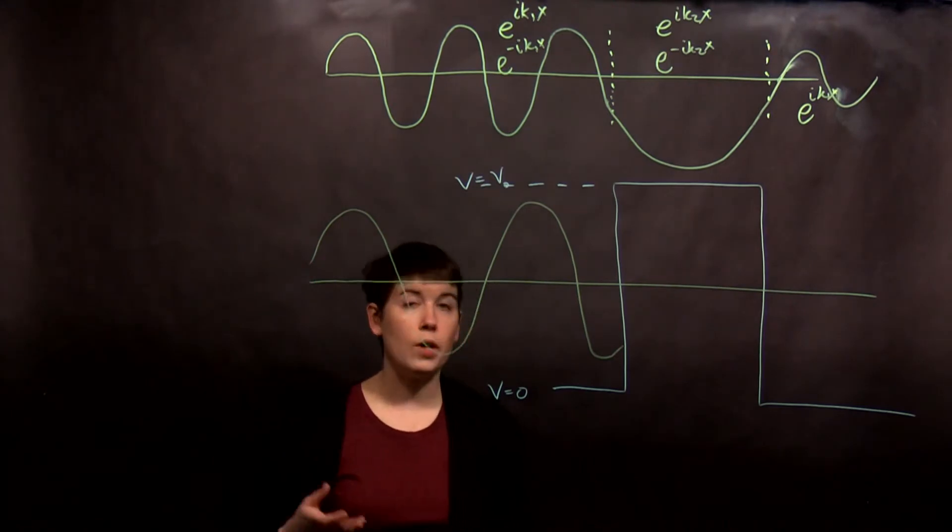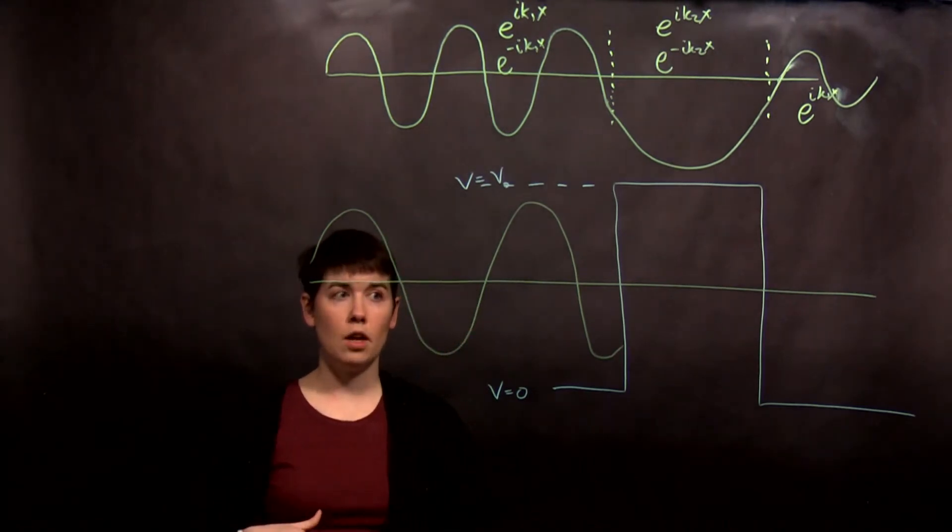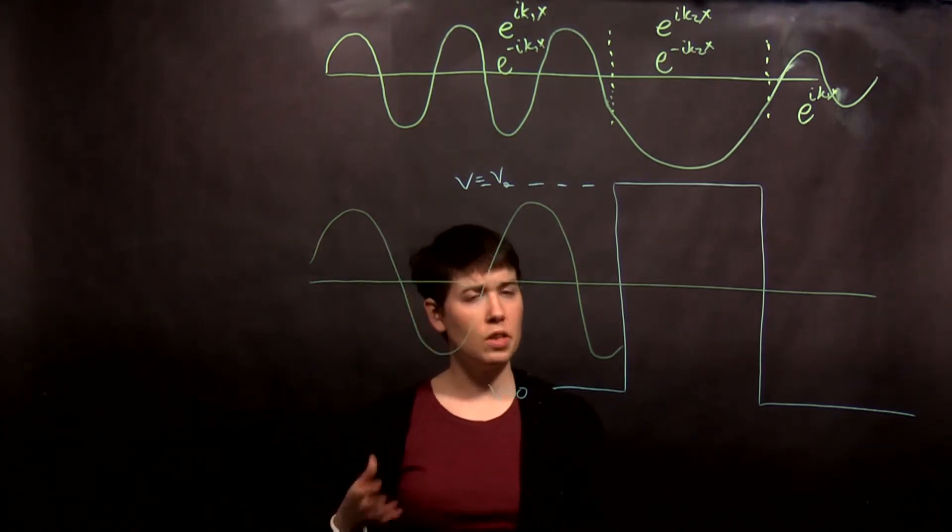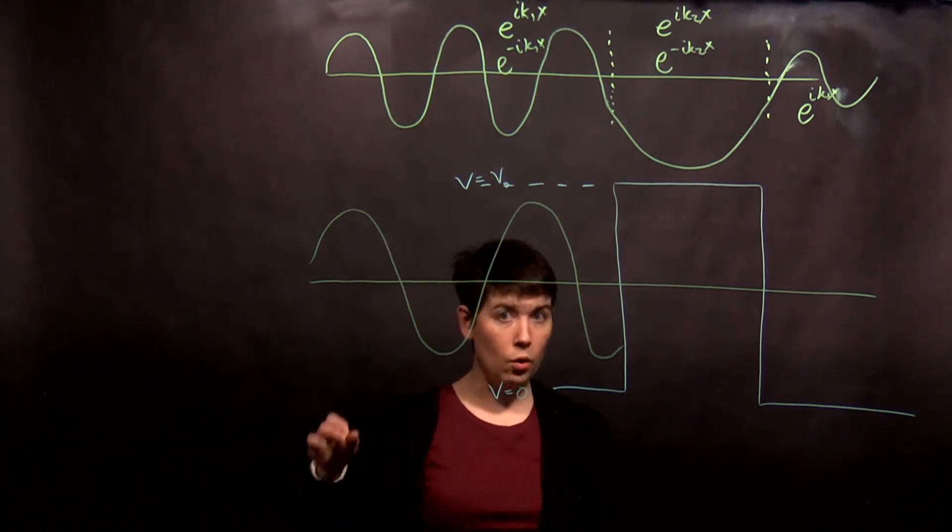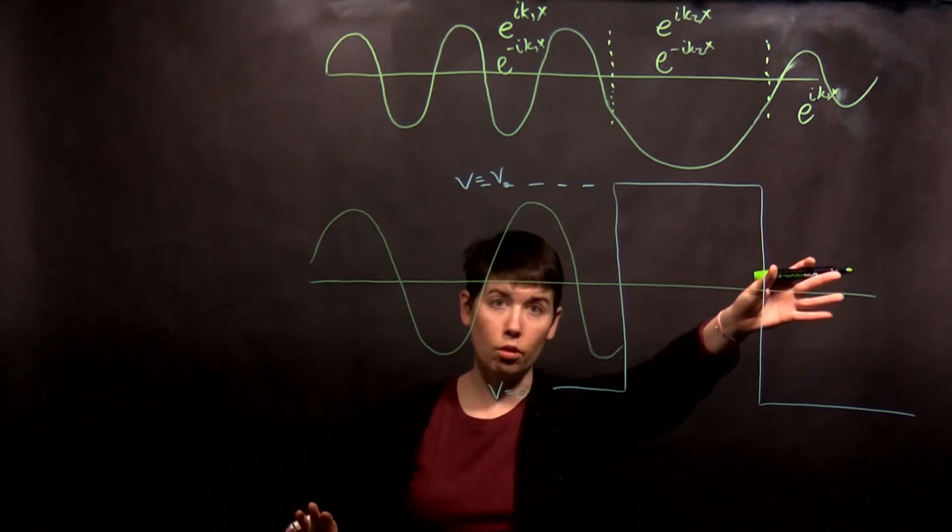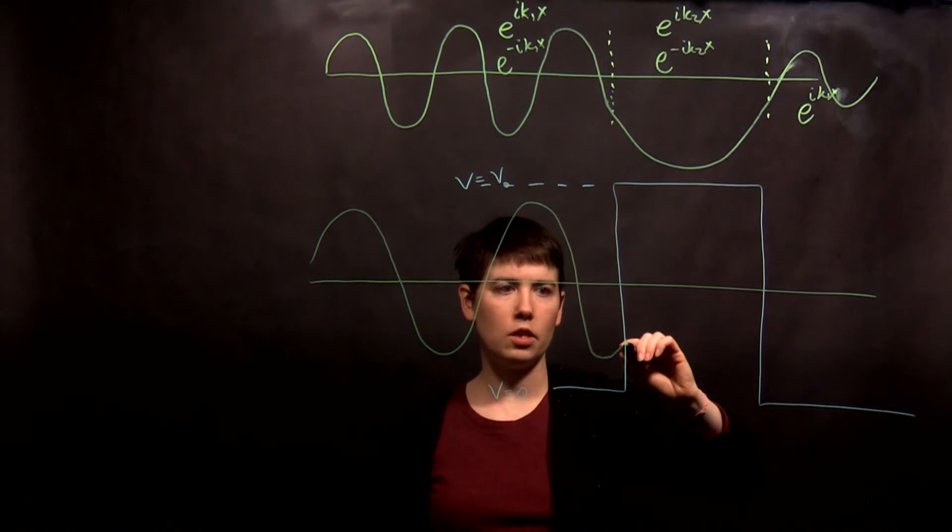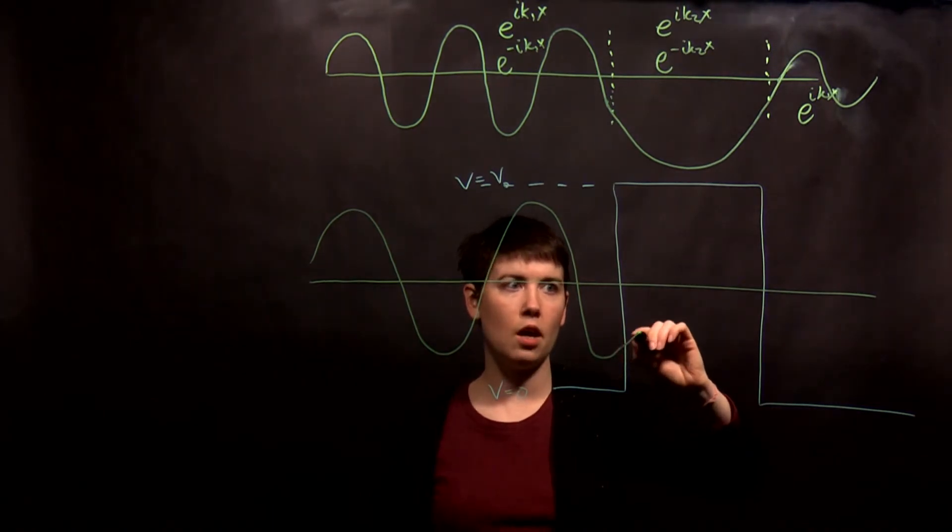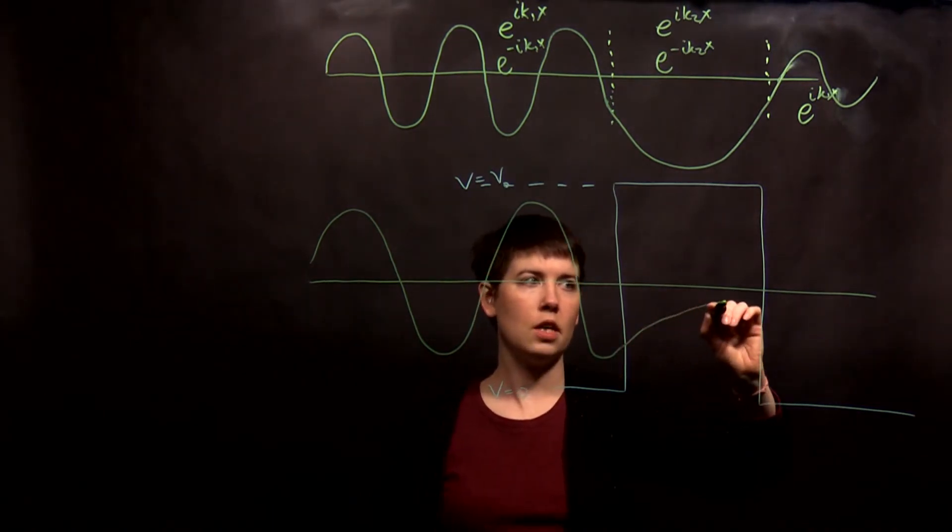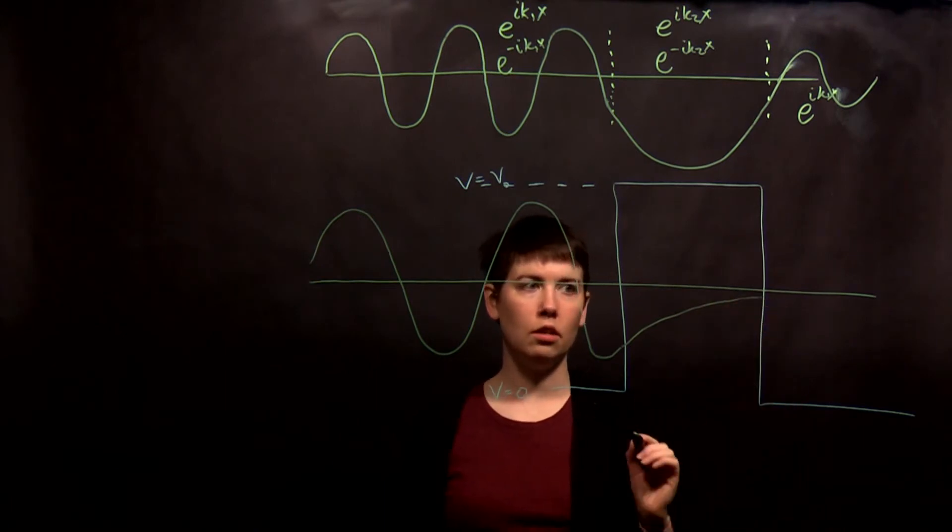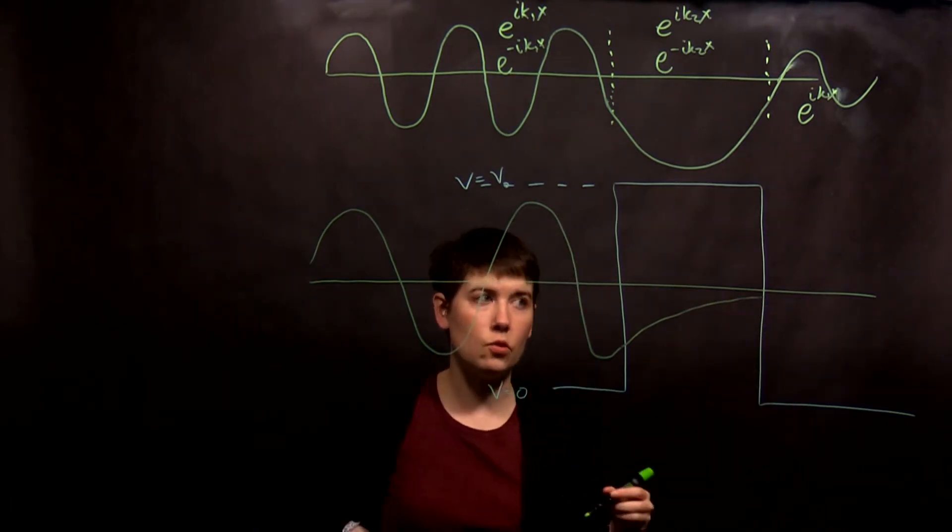Now normally when we had a finite well, it exponentially decayed to zero. Is that what's going to happen here? No. Right? An exponential function only hits zero when you hit infinity. It doesn't go to infinity. So it does in fact, and you know my drawing isn't great, it does in fact decay. Decay, decay, decay. Then it gets here. What happens? It's sinusoidal again.